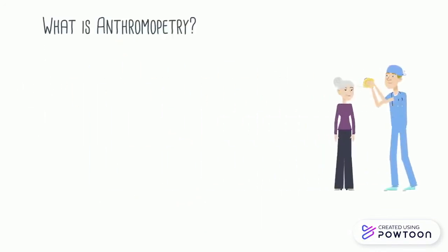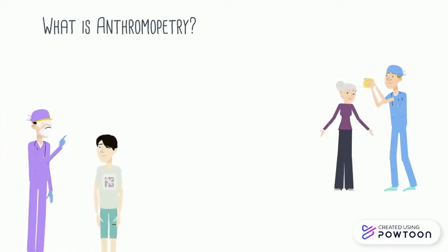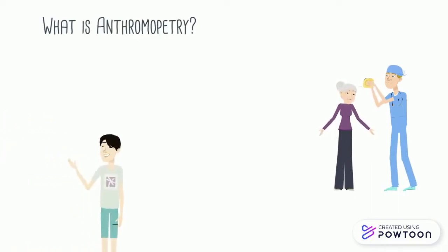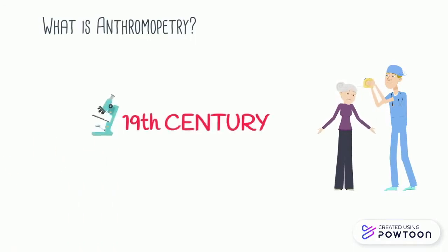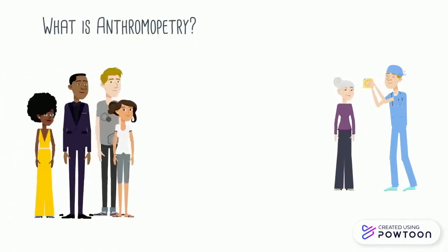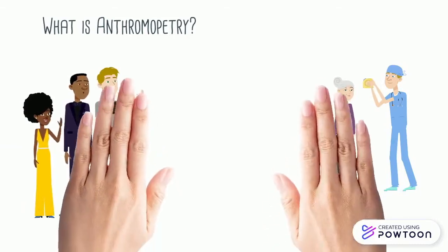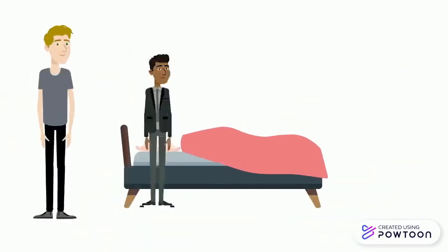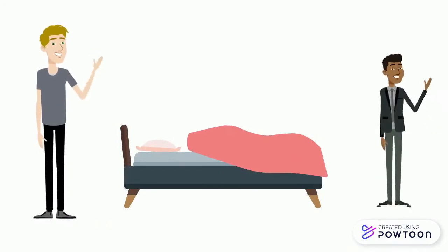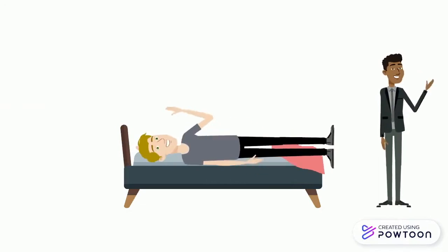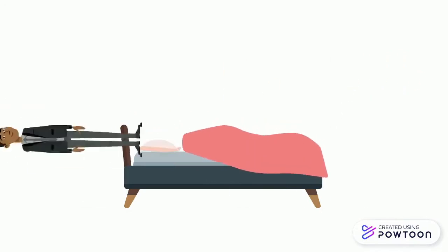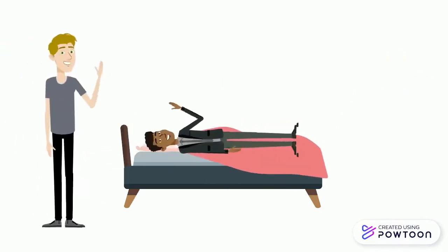Anthropometry is the science that obtains systematic measurements of the human body. It was first developed in the 19th century by physical anthropologists for the study of human variation and evolution across all populations. Not all humans have the same measurements. Imagine that we design a bed for both a Mexican and a Danish man — certainly that will not work. That's where anthropometry comes in useful.